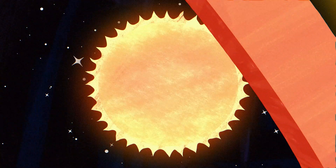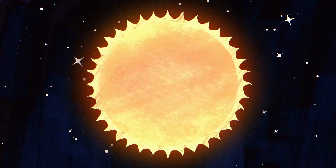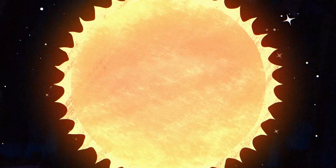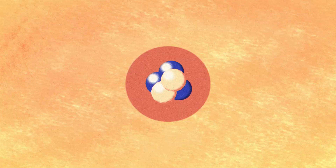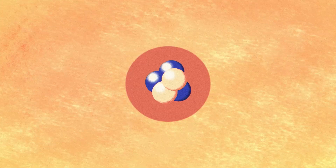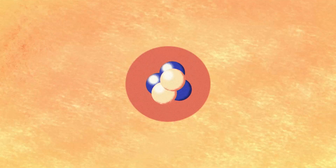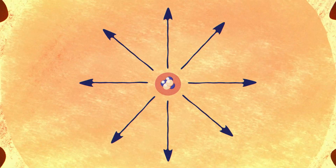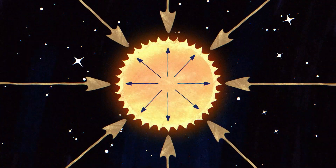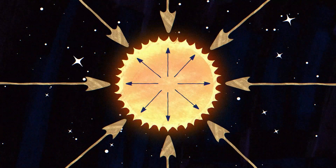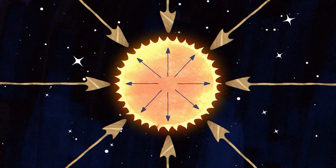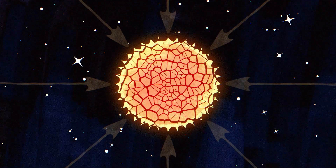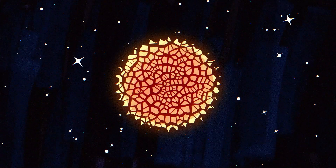But why do black holes exist in the first place? Black holes exist because of the gravitational collapse of massive stars. Stars collapse when they run out of the fuel to sustain the nuclear fusion reactions that power them. These fusion reactions generate an outward pressure that counteracts the force of gravity trying to pull the star inward. When the fuel runs out, the outward pressure decreases, allowing gravity to take over and collapse the star.